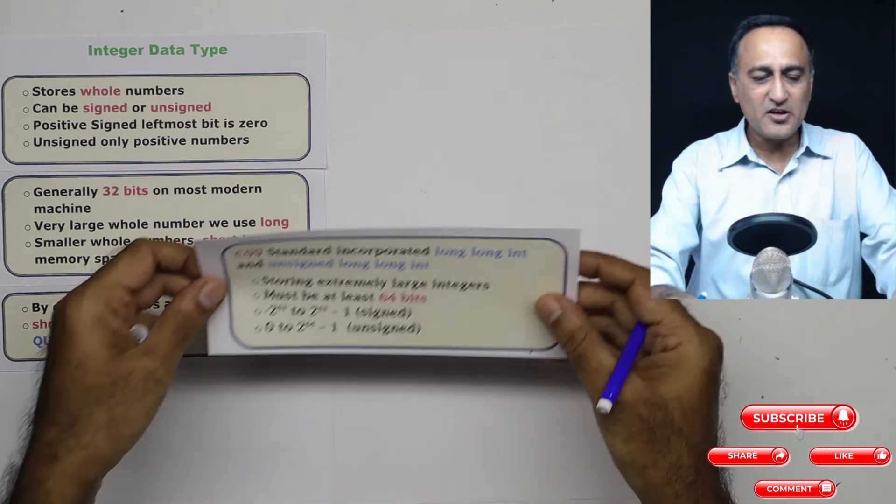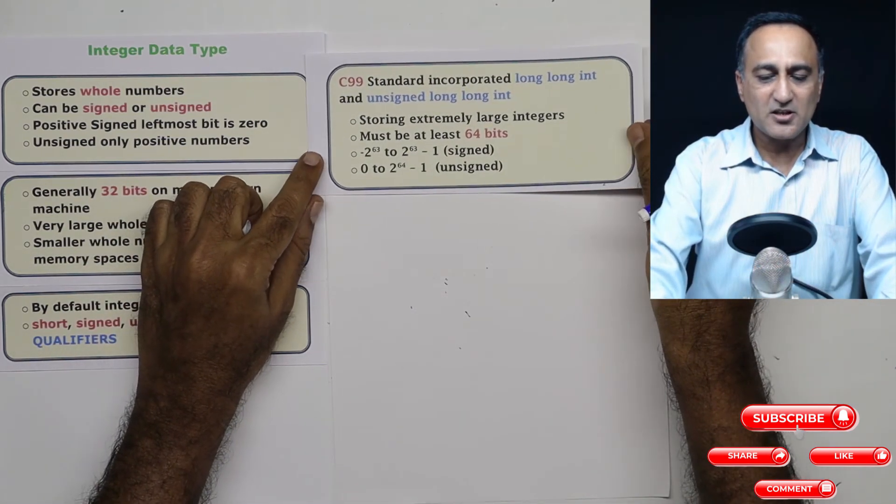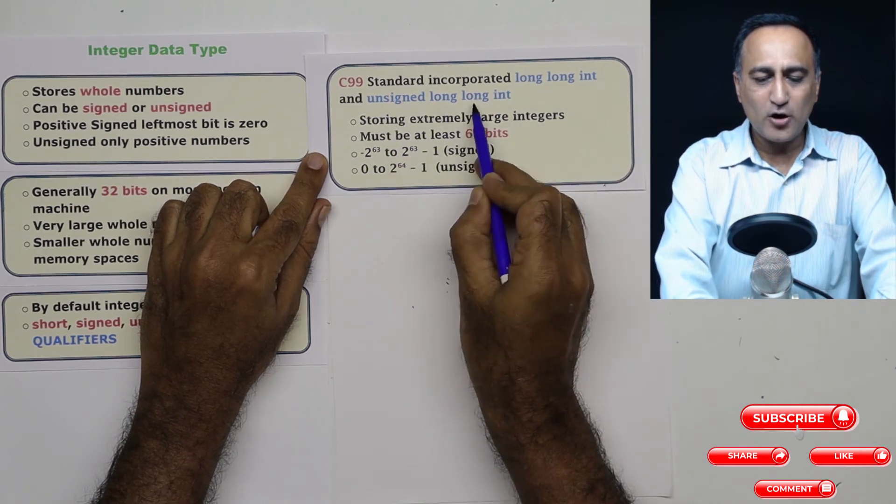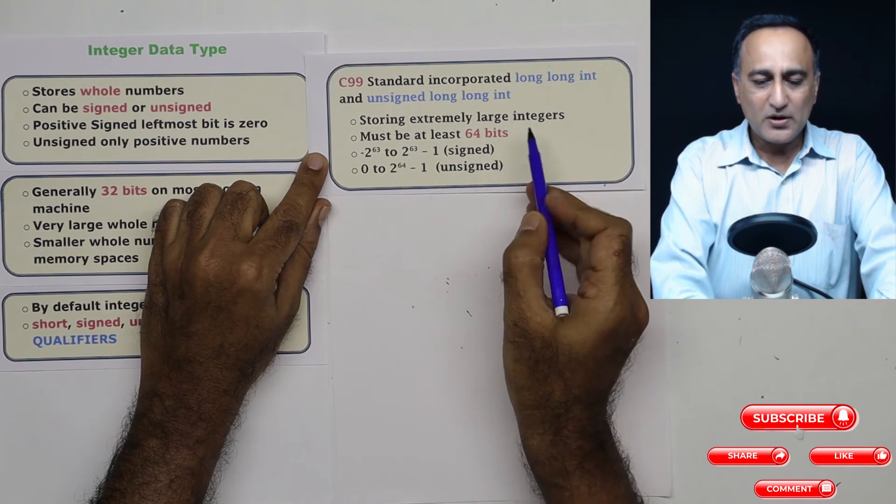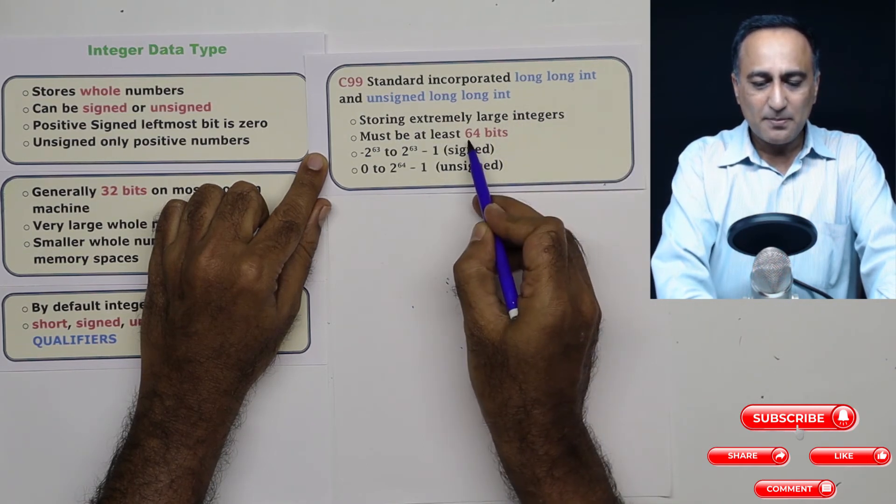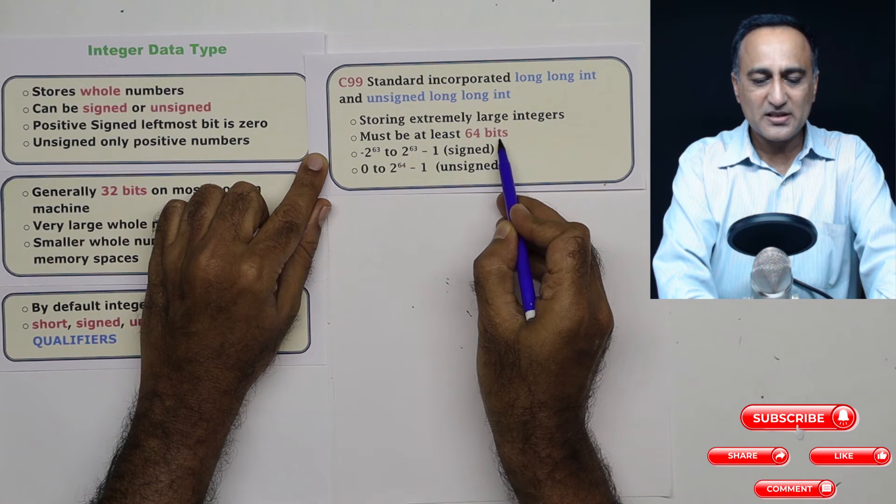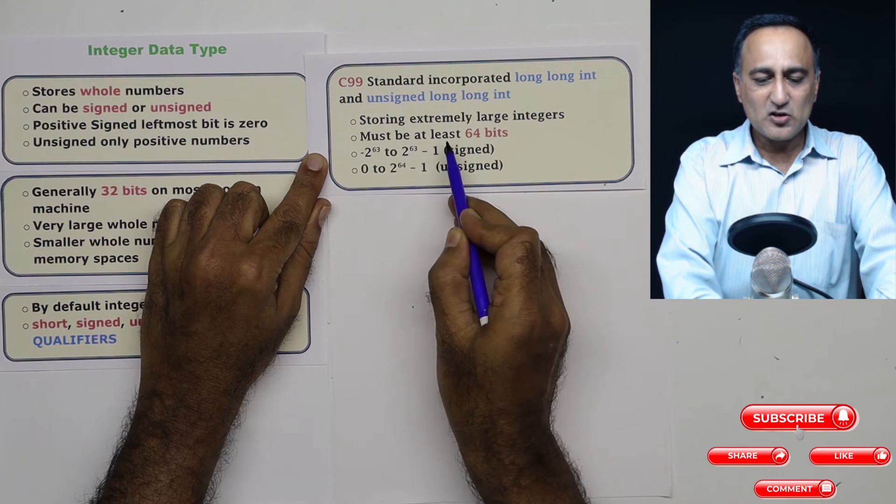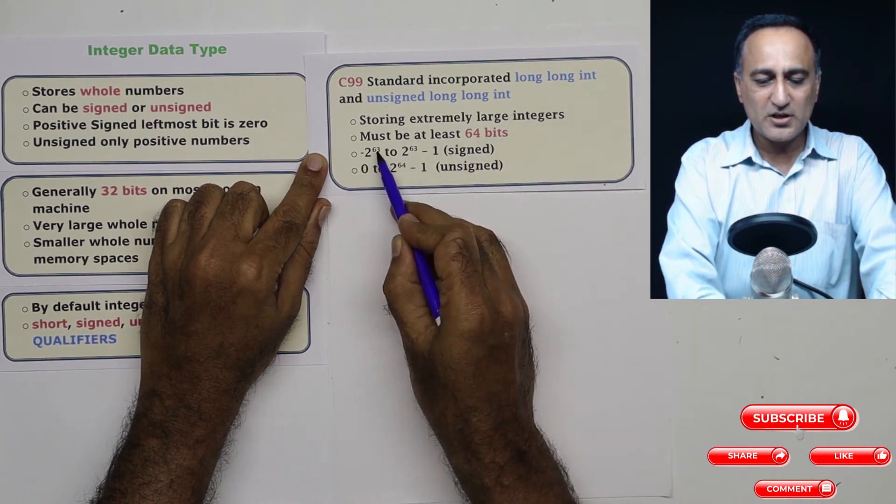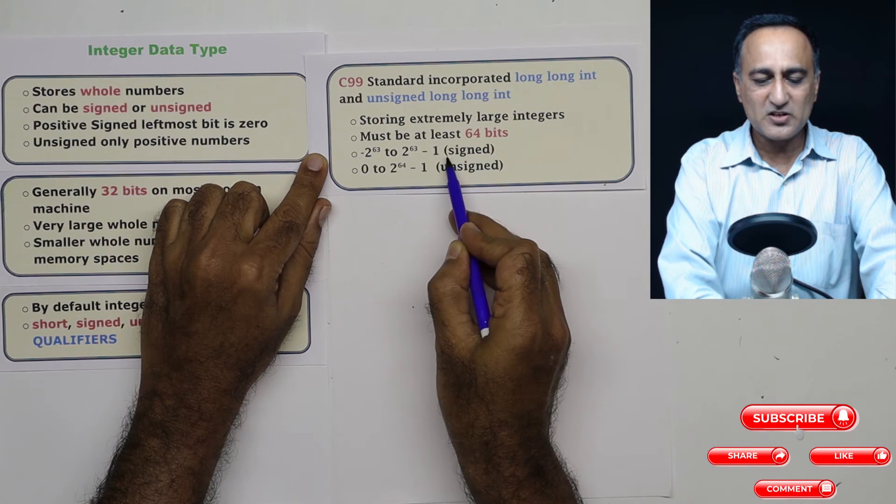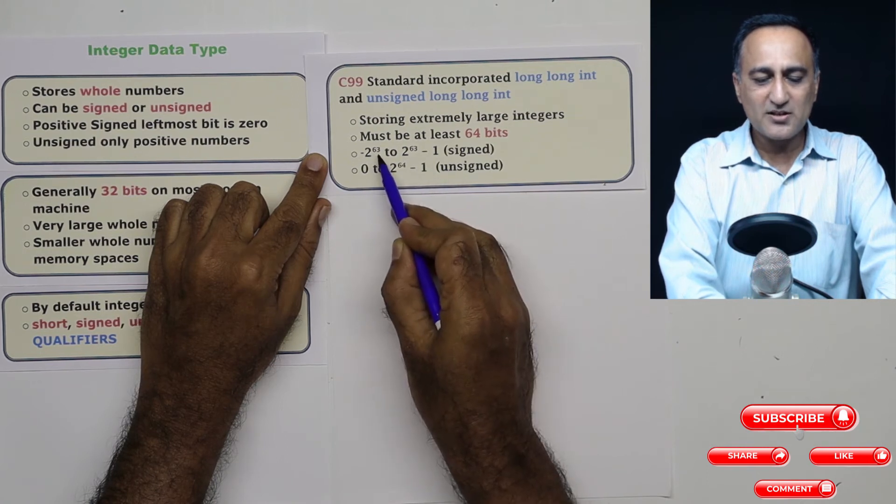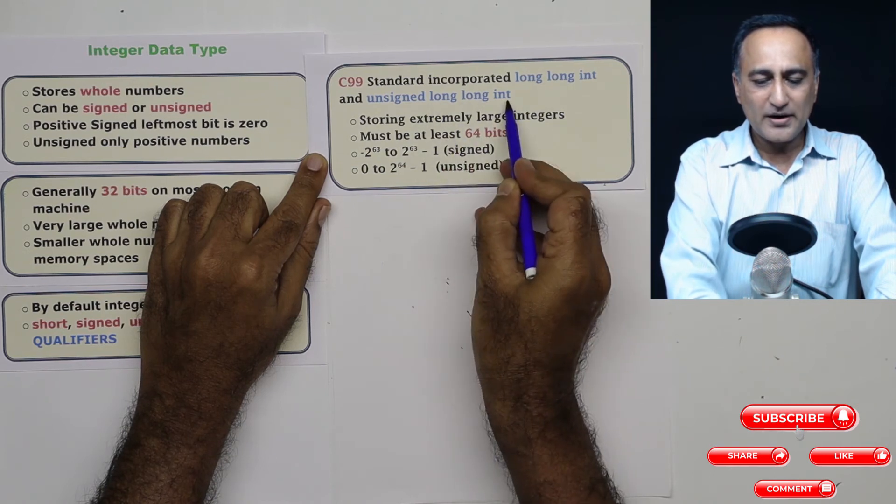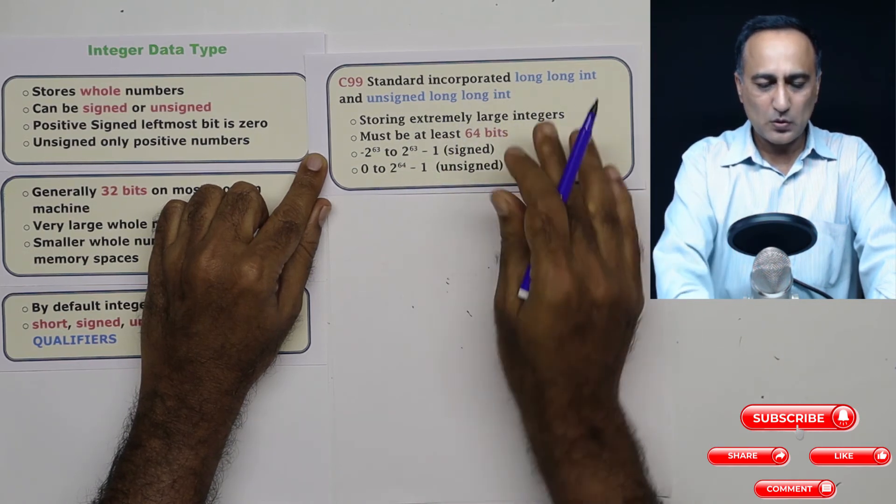C99 has introduced a new type of an integer called as long long int or unsigned long long int. What it says is the size of this type of variable must be minimum 64 bits. It is used for storing very large integers. The range of signed long long int is minus 2 raised to 63 to 2^63 minus 1. Why you are not having 64 is because one bit is used for the sign. In case of unsigned long long int, the range is 0 to 2^64 minus 1.